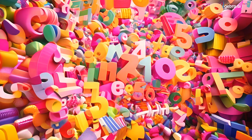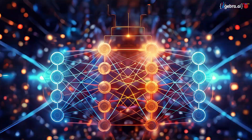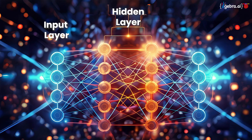Our neural network city has three main areas: the input layer, where data enters; the hidden layers, where all the magic happens; and the output layer, where we get our answers.